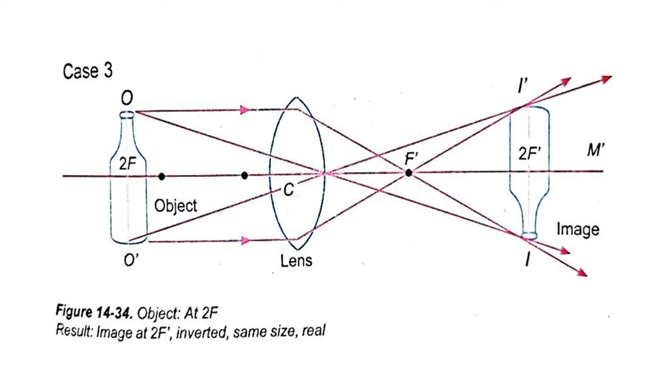In case number three, we can notice that the object placed at 2F position will produce an image that is at the 2F prime position. It is inverted and has the same size and it is considered to be real.